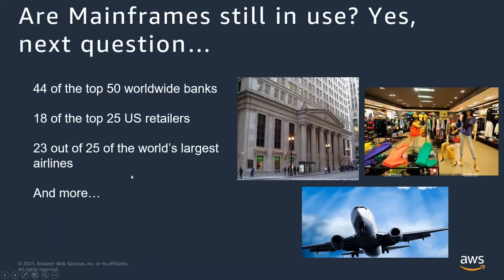Are mainframes still in use? Yes. Banks, retailers, the largest airlines — if you're a Costco member, for example, everything runs through their mainframe and you can literally see a green screen in the store. Pretty much any large enterprise is going to run either a mainframe or an AS/400 midrange system. They've been working on systems like this forever, because they just work and they're amazing systems.